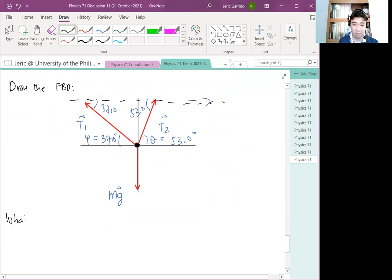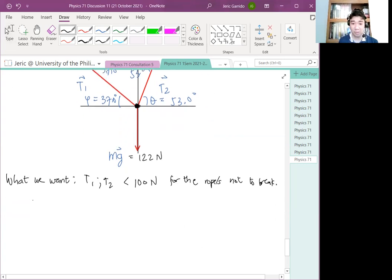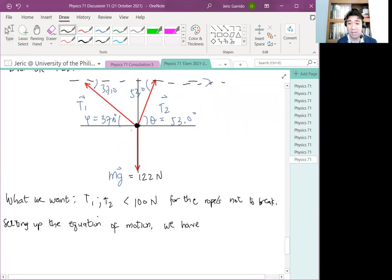What we want is for the tension 1 and tension 2 to be less than 100 N each. Yun yung gusto natin. Para hindi mag-break, for the ropes not to break. So we will check if T is less than 100 N kapag nakuha natin yun. The weight of the object is 122 N. So what we want is to set up, setting up the equation of motion. From our free body diagram, summation of forces. We need to decompose this one. We also need to decompose this one into x and y components.